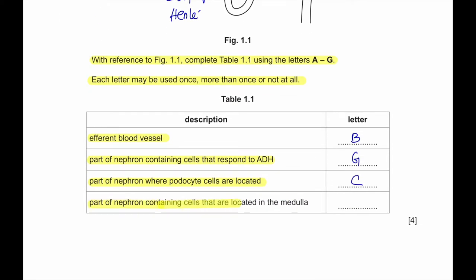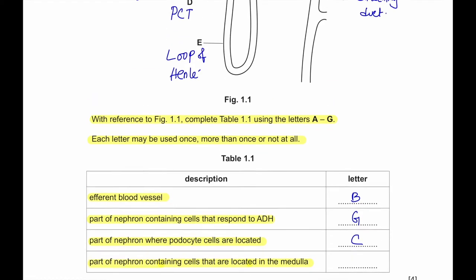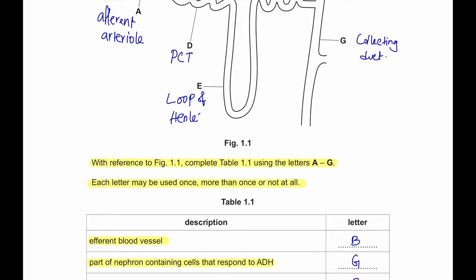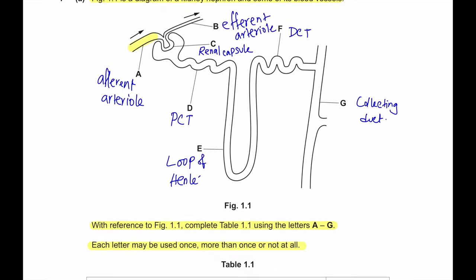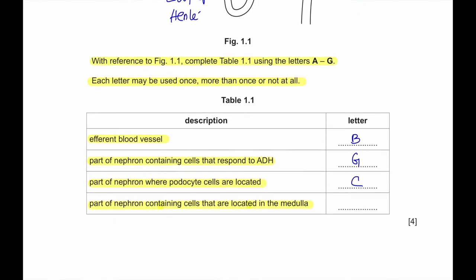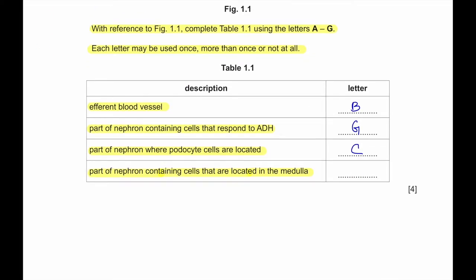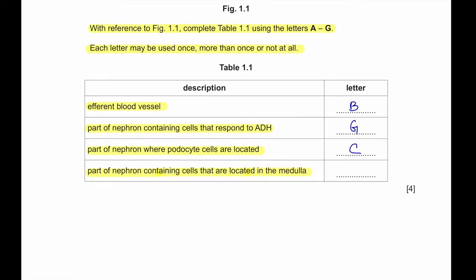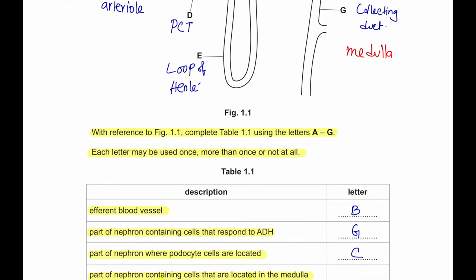Part of a nephron containing cells that are located in the medulla. We know that the loop of Henle is located in medulla. This region gets divided into two portions - the top portion is in cortex and the bottom portion is in medulla. We can have the collecting duct in medulla or the loop of Henle. Since it says part of the nephron, we're going to say it is E, loop of Henle.